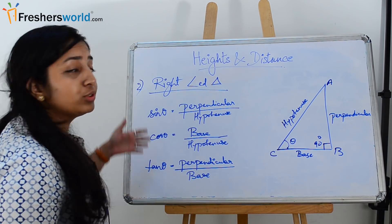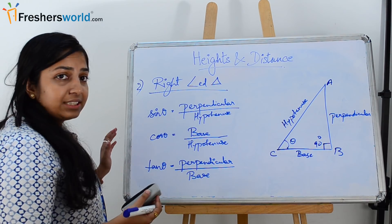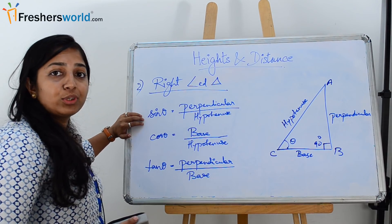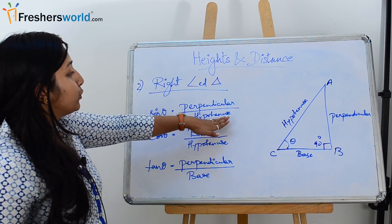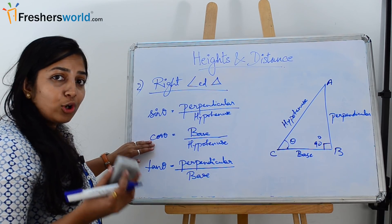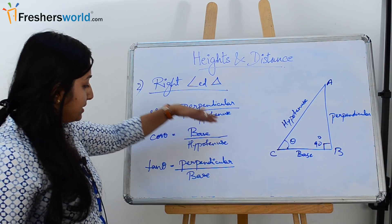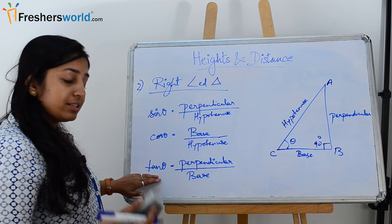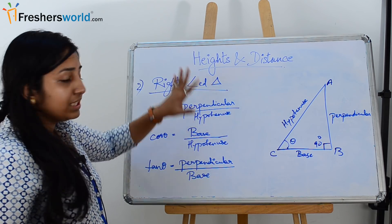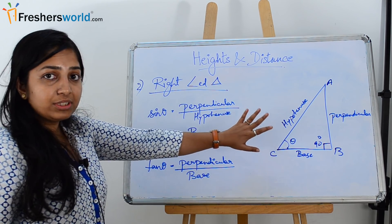We also have three more ratios: cosec θ is the reciprocal of sin θ, so it equals hypotenuse / perpendicular; sec θ is the reciprocal of cos θ, so it equals hypotenuse / base; and cot θ is the reciprocal of tan θ, so it equals base / perpendicular. These are the six formulas you need to remember related to the right angle triangle.